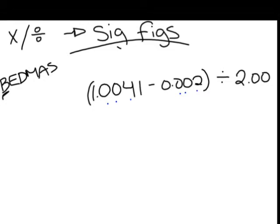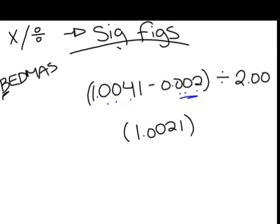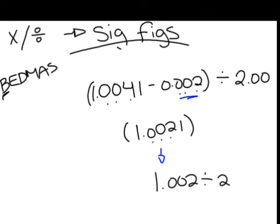You notice that the second number only has three decimal places. So your answer, or your answer from that part of it, will be 1.0021, and you'll notice that only three decimal places will be present. So if you take that and go 1.002 divided by 2.00, sorry.